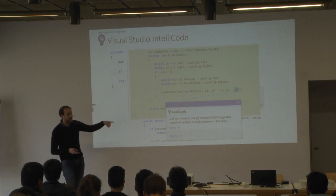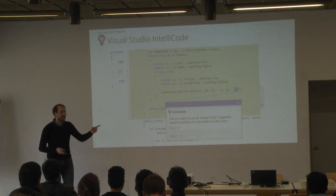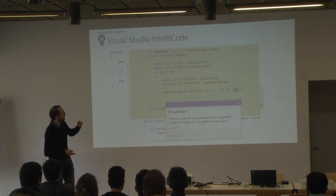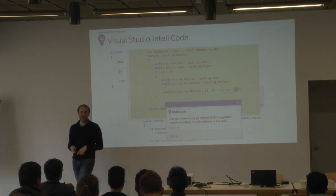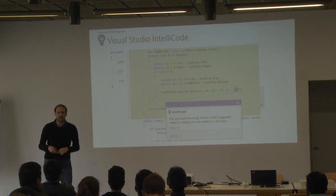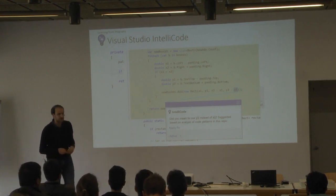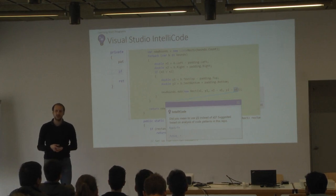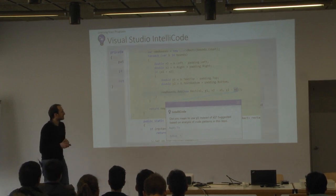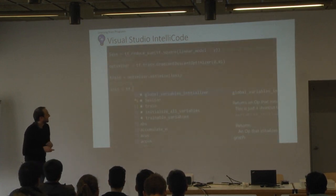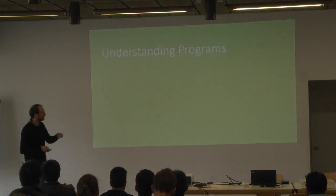My personal baby is where it finds likely bugs when you do a pull request — it might give you a warning saying maybe you wanted to use another variable here, because it's strange that you're subtracting an x-coordinate from a y-coordinate. This is only dogfooding internally so you can't play with it. We also do this in Python and all kinds of things.